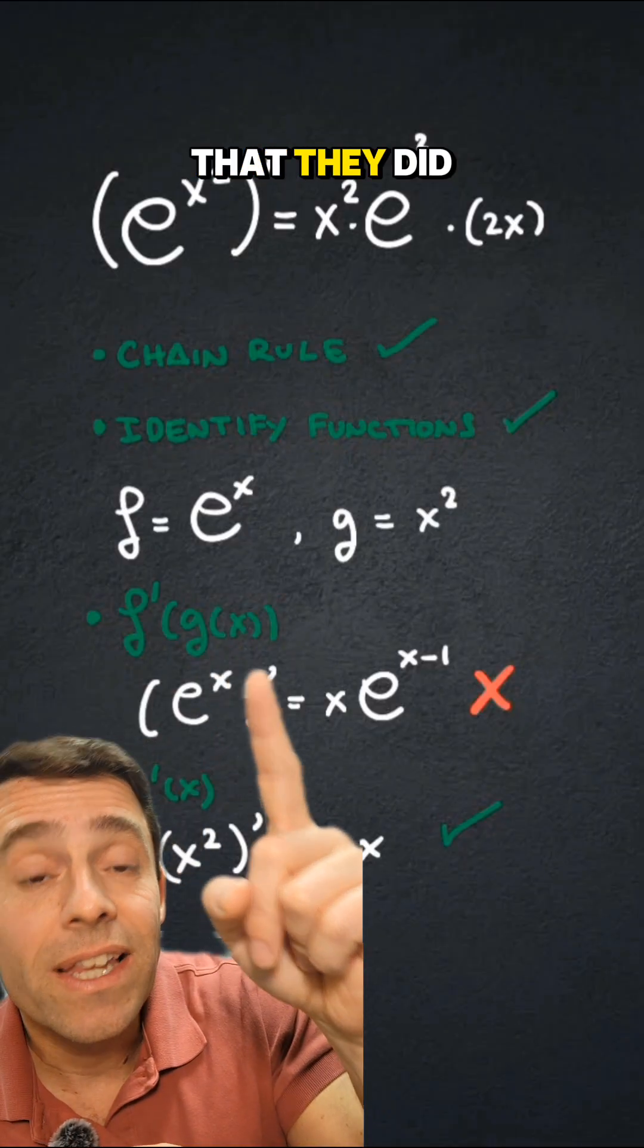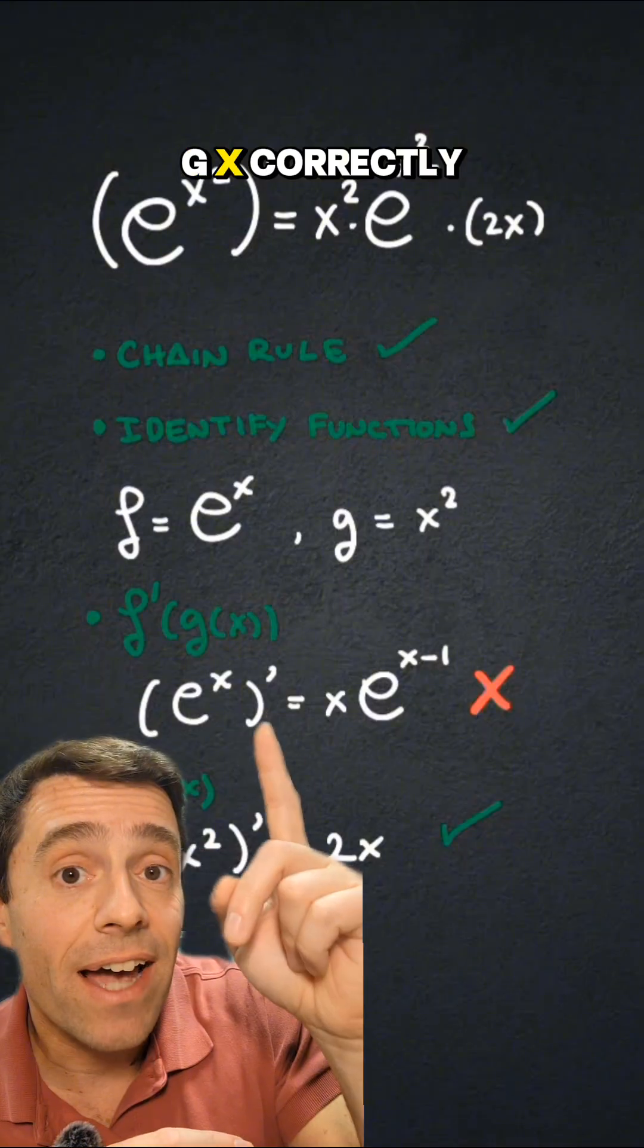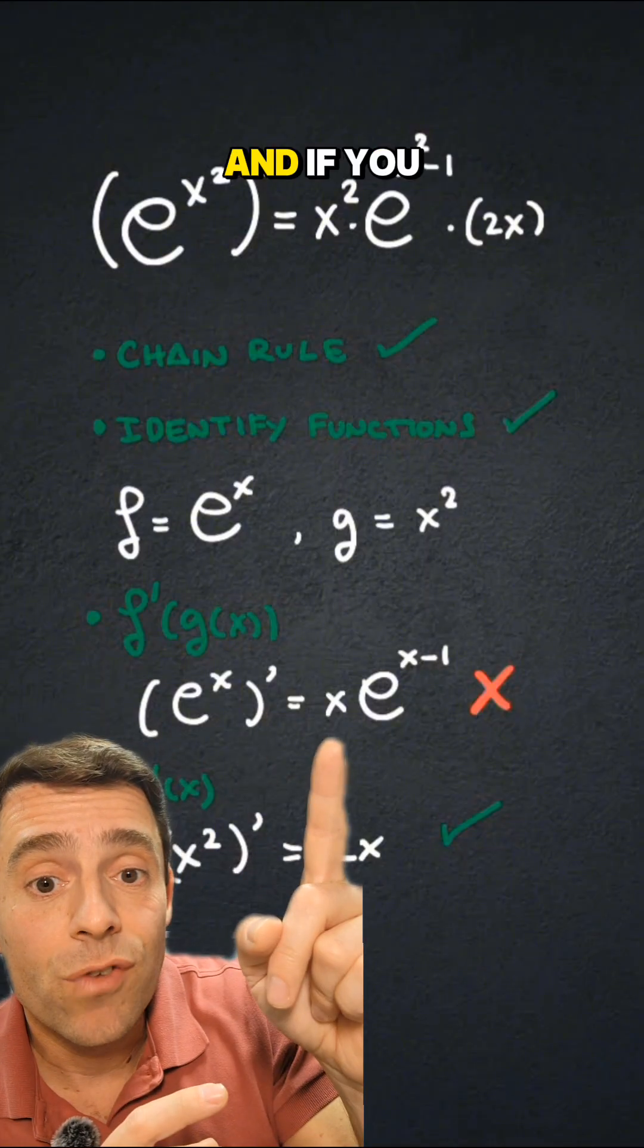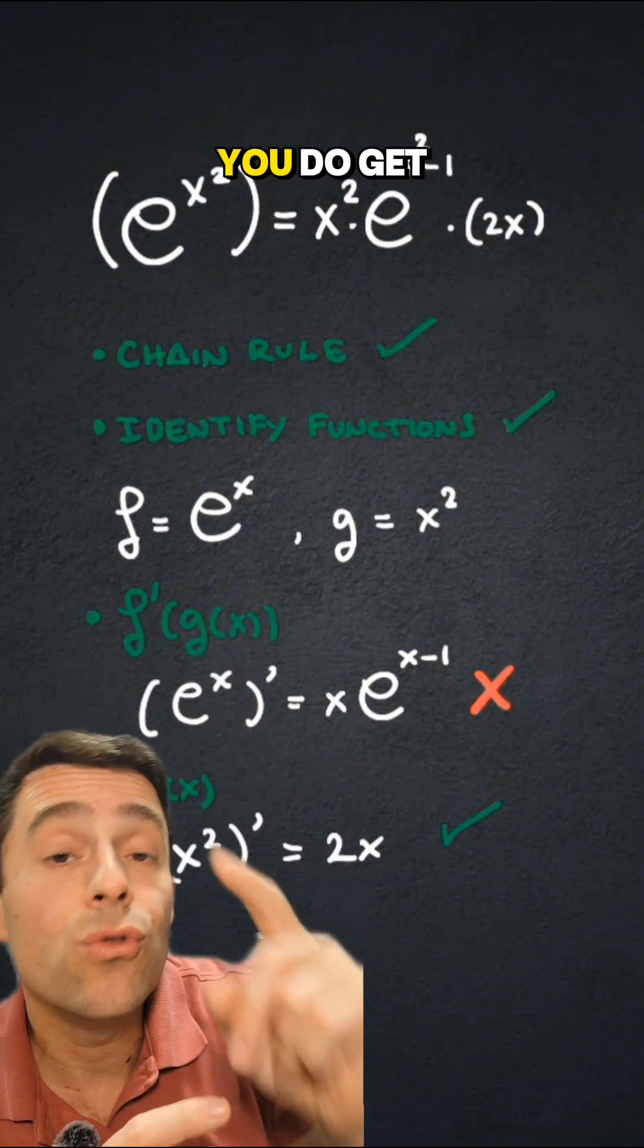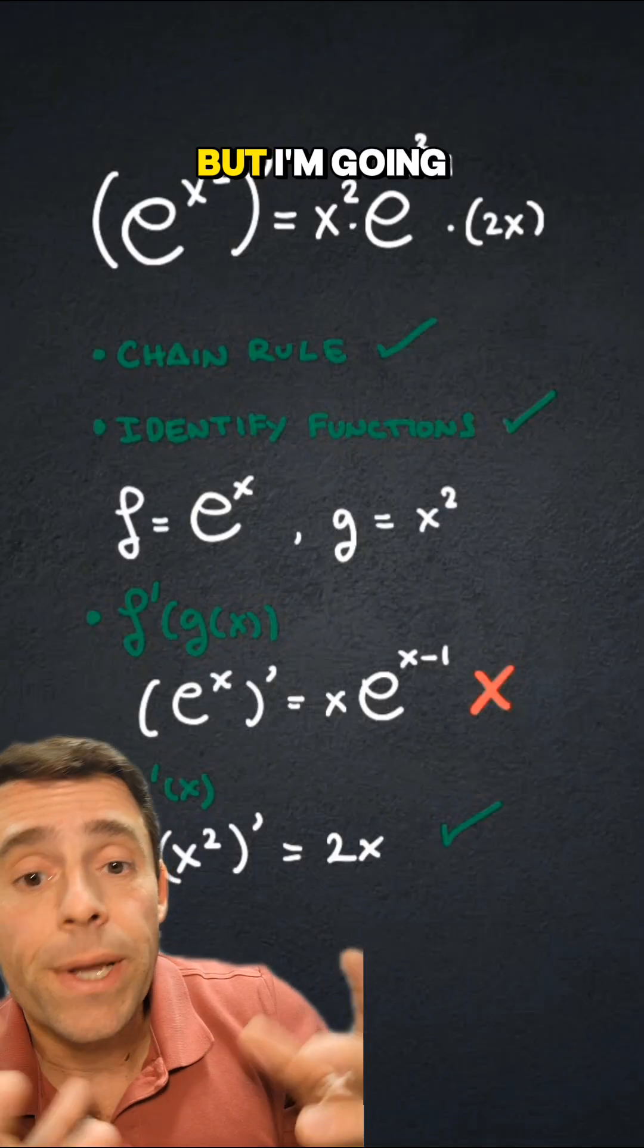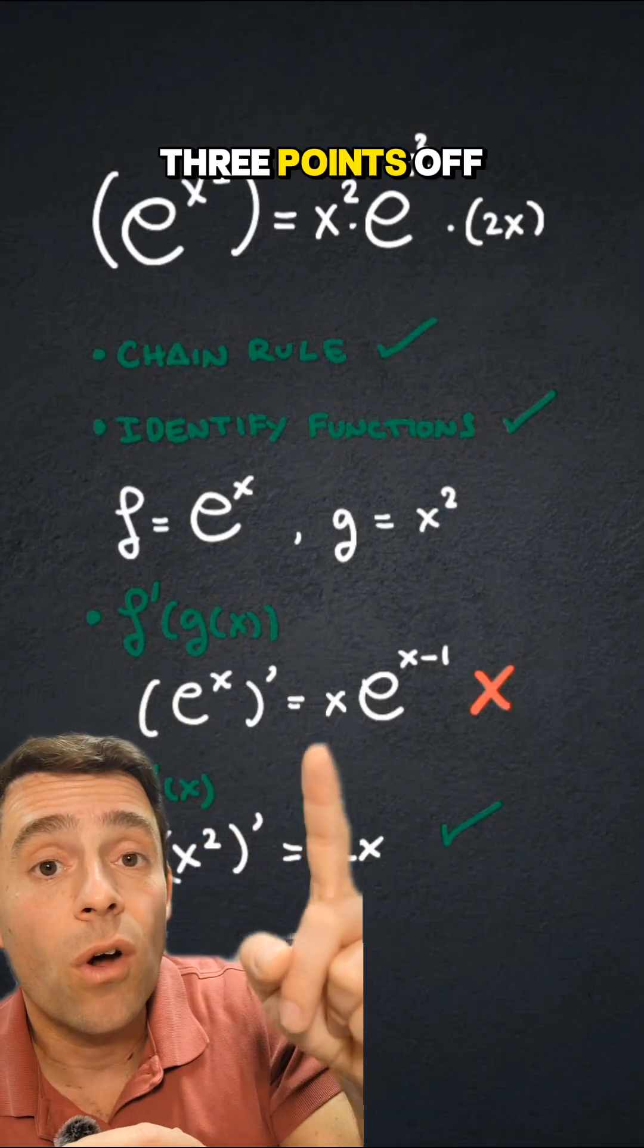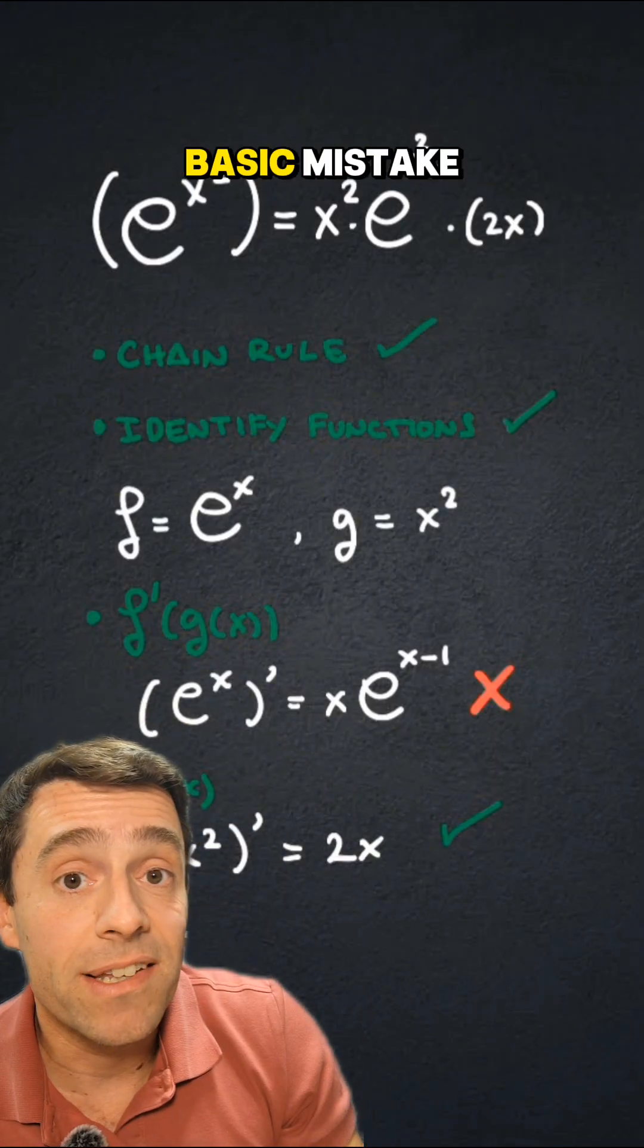Notice though that they did evaluate this at g of x correctly, and if you put x squared for x here, you do get the solution they got, which would have been right. But I'm going to take all three points off for that very basic mistake.